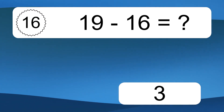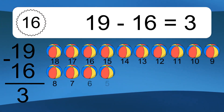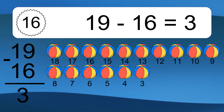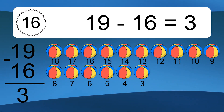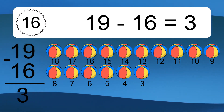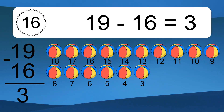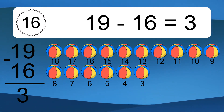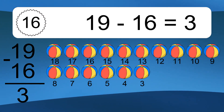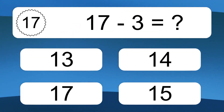19 minus 16 equals 3. Let's count it: 18, 17, 16, 15, 14, 13, 12, 11, 10, 9, 8, 7, 6, 5, 4, 3. 17 minus 3 equals what?